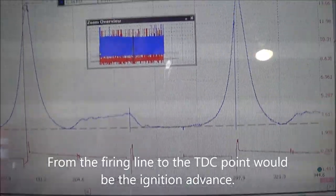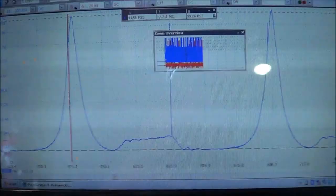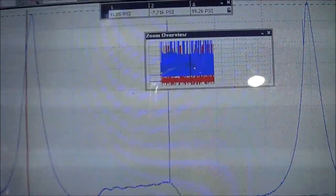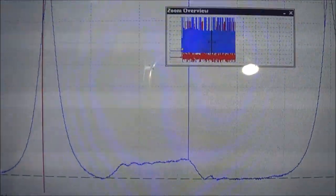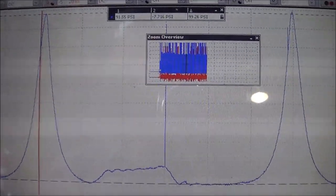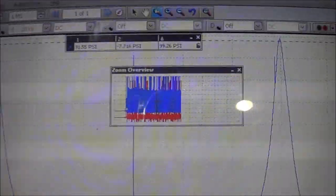Because here is gonna be TDC on that cylinder, and there's another TDC. Okay, so now we're looking at the zoom-in view of just one 720 degree cycle.